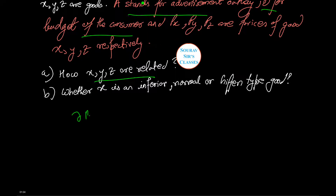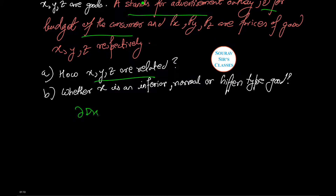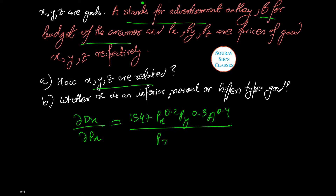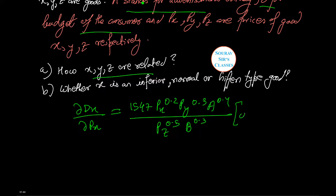Therefore, del Dx by del Px equals 1547 into Px to the power 0.2, Py to the power 0.3, A to the power 0.3, divided by Pz to the power 0.5 and B to the power 0.3, with the additional factor of 0.2 into Px to the power minus 0.8. This whole term is greater than zero.